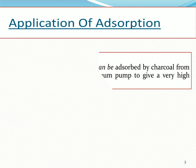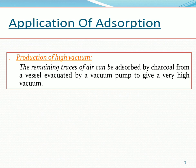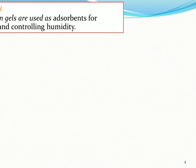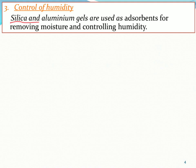First application: production of high vacuum. बच्चों, जैसे vacuum create करना हो तो हमको air को evacuate करना पड़ता है vacuum pump के through। अगर आप high vacuum बनाना चाहते हो तो उसमें charcoal ले लो — जो भी remaining air होगी वो adsorb हो जाएगी। यह specially poisonous gases को adsorb कर लेता है और इसका use coal mines में भी होता है। Second application: control of humidity — silica and aluminium gel।